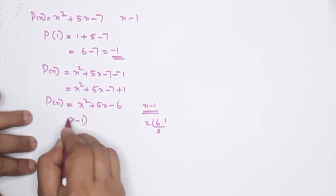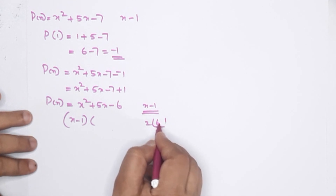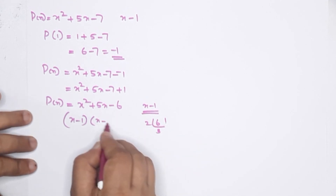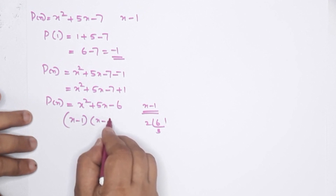Since x minus 1 is already a factor, the other factor is x plus 6, giving x squared plus 5x minus 6 equals x minus 1 times x plus 6.